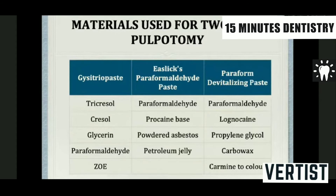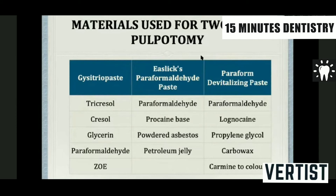Certain materials are used for two-visit pulpotomy, also called desensitizing pulp therapy. These include GC Straw paste, Slex paraformaldehyde paste, and paraform devitalizing paste. The main constituent is paraformaldehyde with other ingredients. These are used for two-visit pulpotomy procedures.